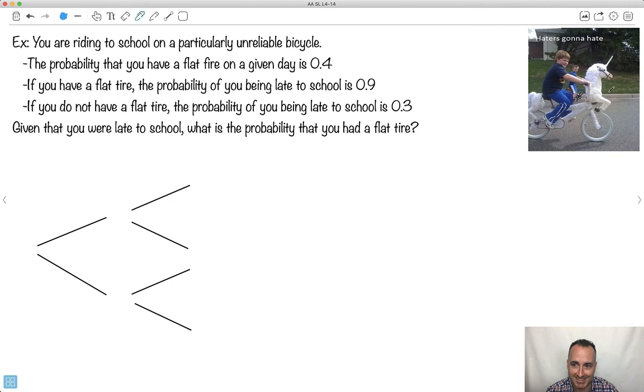I love this. Haters got to hate. This kid is awesome. All right, so you're riding to school on a super bad bike. This is a very bad one because the probability that you have a flat tire on a given day is 0.4. That is awful. So probability flat is 0.4. If you have a flat tire, the probability that you're late is 0.9. But if you didn't have a flat tire, then the probability that you're late is 0.3. In other words, you're basically late a lot of the times. You're late 30% of the time to begin with.